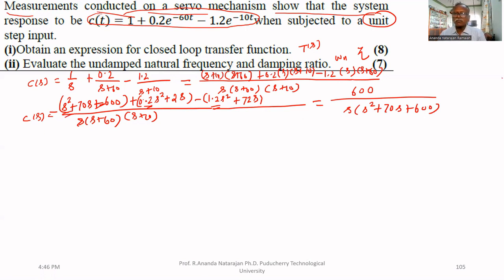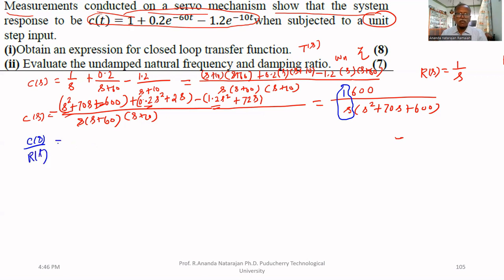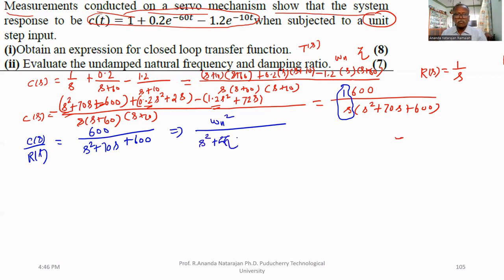We know that for a unit step input, R(s) = 1/s. Bringing 1/s to the left-hand side, we get the closed-loop transfer function: C(s)/R(s) = 600 / (s² + 70s + 600). Comparing this with the standard second-order form ωn² / (s² + 2ζωn·s + ωn²).